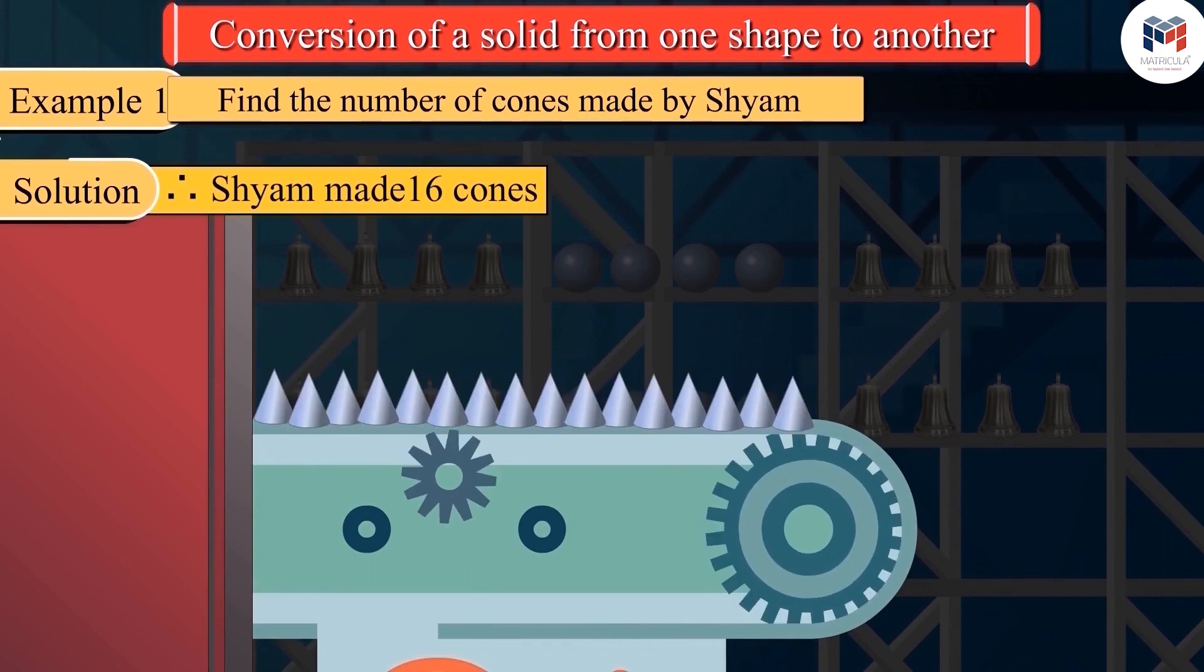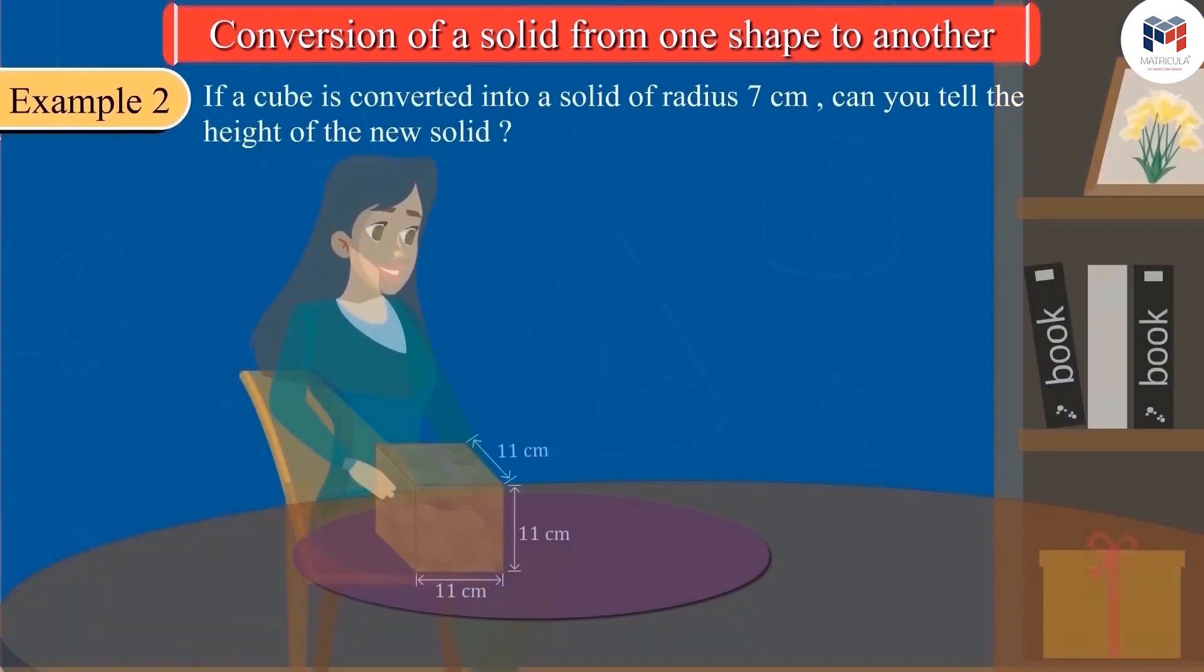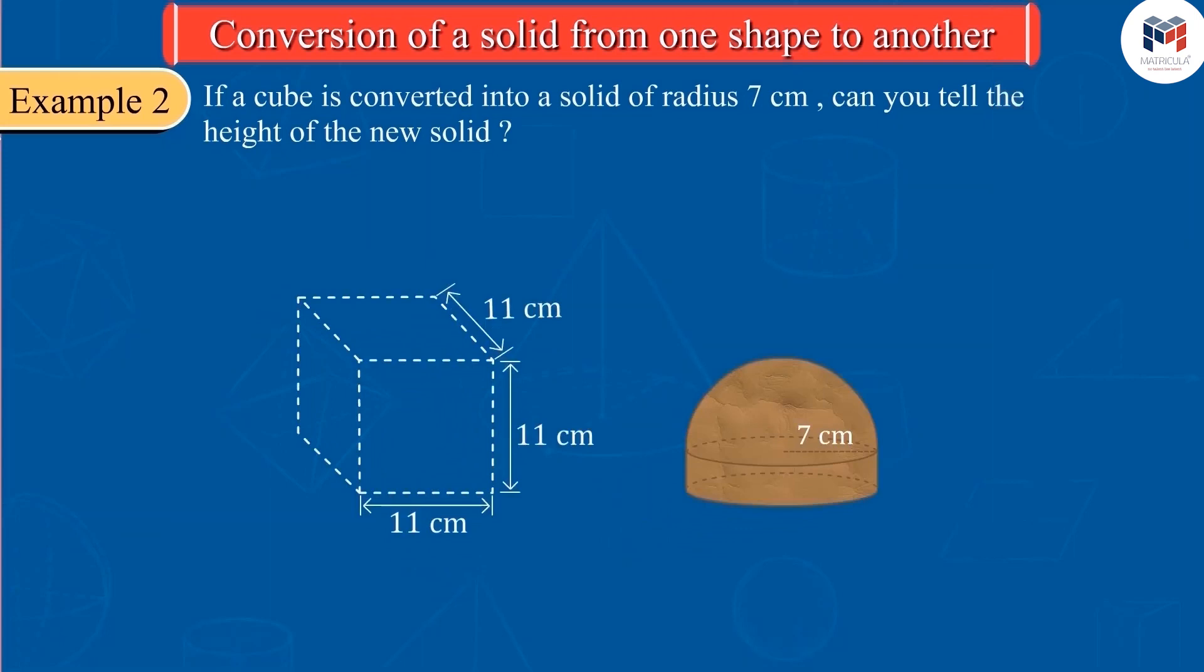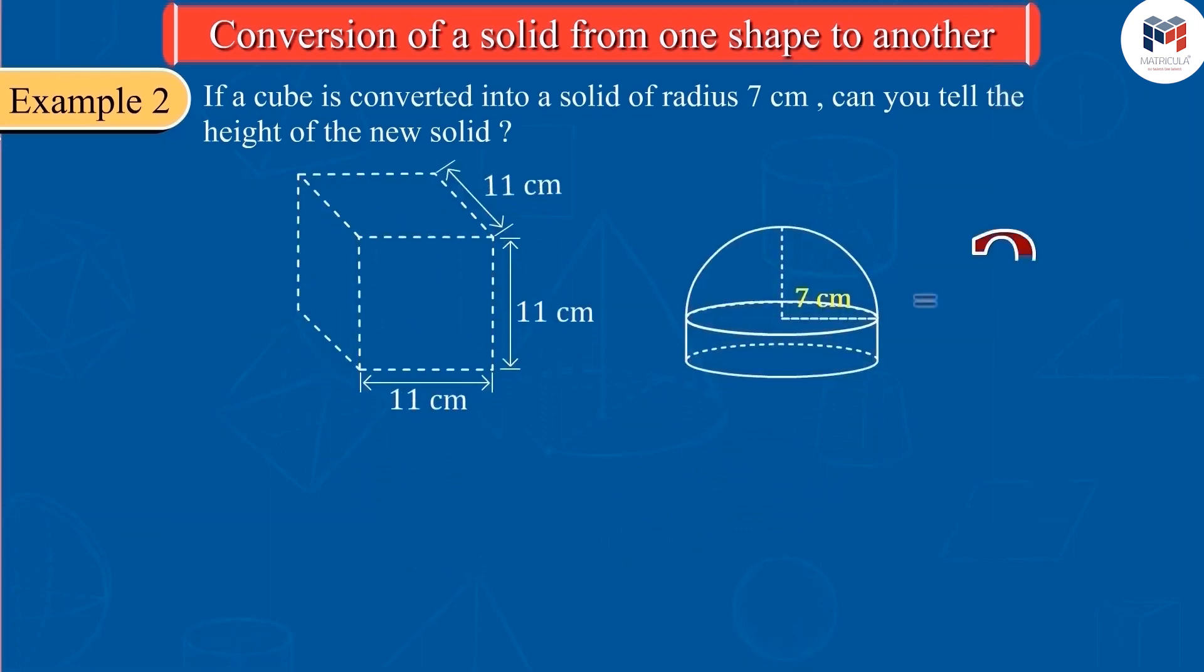Let's look at another example. This cube is made of model making clay. Sanjana transformed this solid into another solid with a radius of 7 cm. Can you calculate the height of this solid?